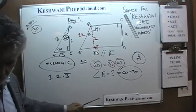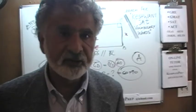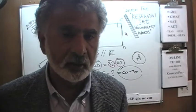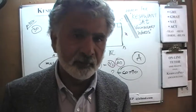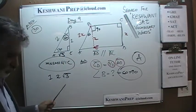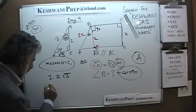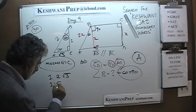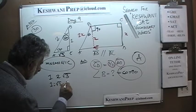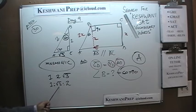It all boils down to being able to recognize a 30-60-90 triangle in an exam. They always come in the ratio of 1 to root 3 to 2, arranged from smallest to largest. The side that is 1 faces the 30 degrees, root 3 faces 60 degrees, and 2 faces 90 degrees.